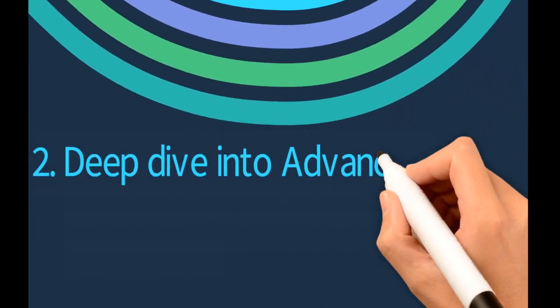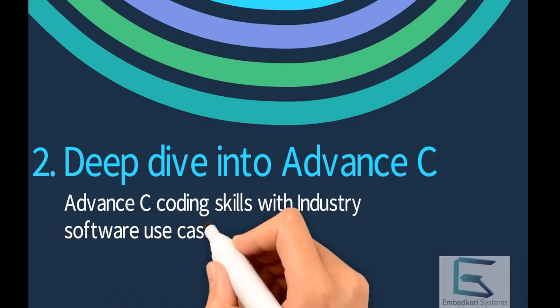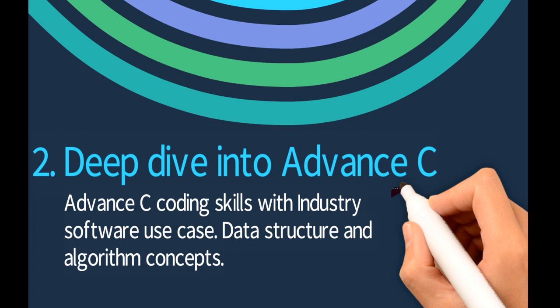The next level is a deep dive into advanced C — advanced C coding skills with industry software use cases, data structures, and algorithm concepts. You can take examples of already developed software use cases and try to understand data structure and algorithm concepts more deeply and practice them. We have separated this advanced C from normal C learning so that one can go from C learning to embedded C first, and then come to advanced C.